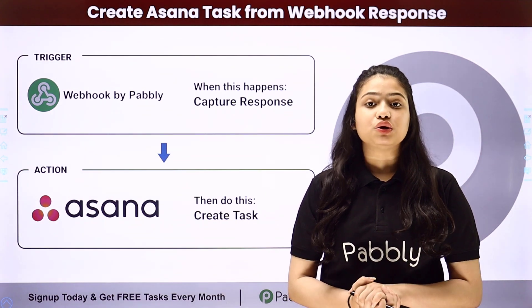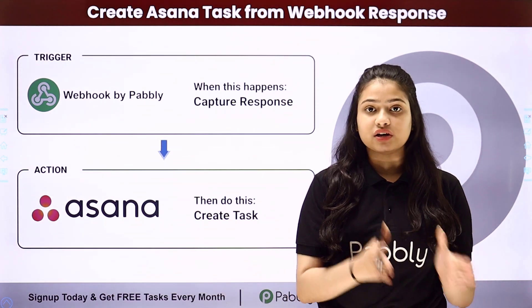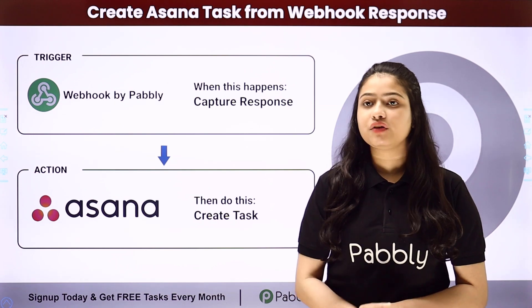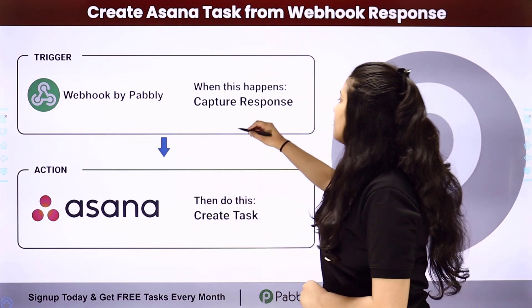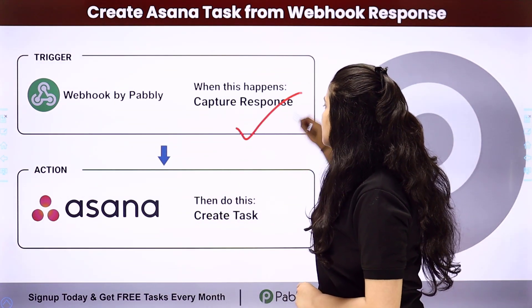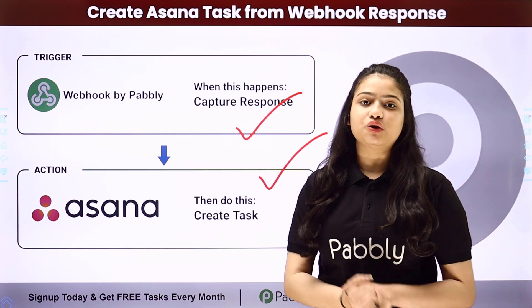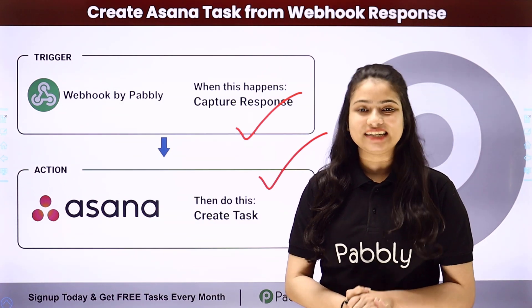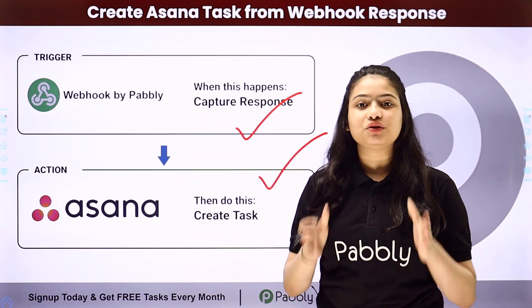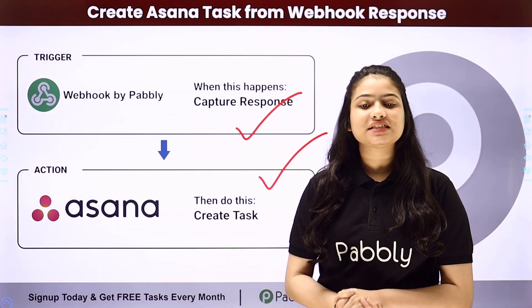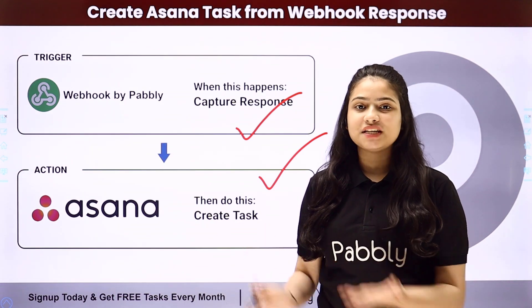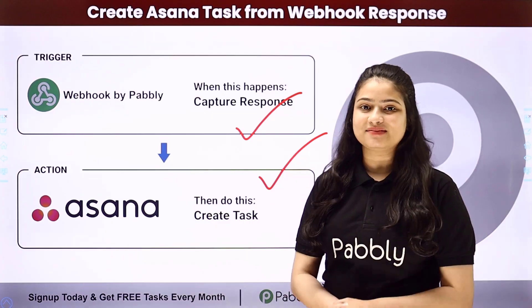Pabbly Connect runs on two principles: trigger and action. We are going to take Webhook by Pabbly in our trigger and Asana in our action, and we will connect both of them in order to automate this entire process. To learn the entire automation step by step, let me take you all to my screen.